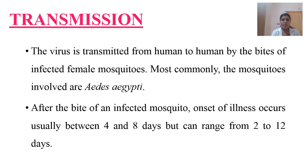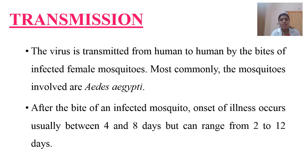The virus is usually transmitted from human to human by the bites of infected female mosquitoes, and these female mosquitoes are usually the Aedes aegypti mosquitoes. After the bite of an infected mosquito, symptoms usually begin within 4 to 8 days, and sometimes it can range between 2 to 12 days. This is the incubation period of the disease.